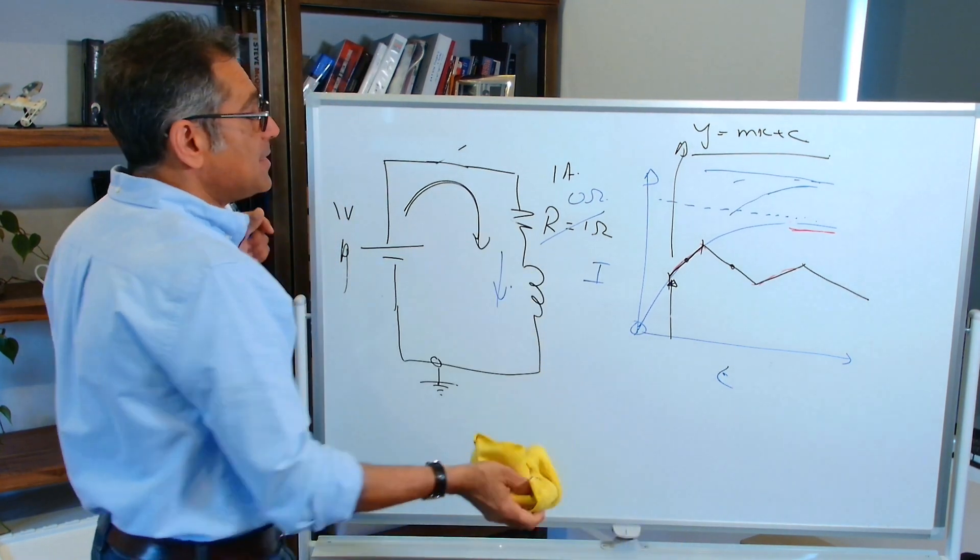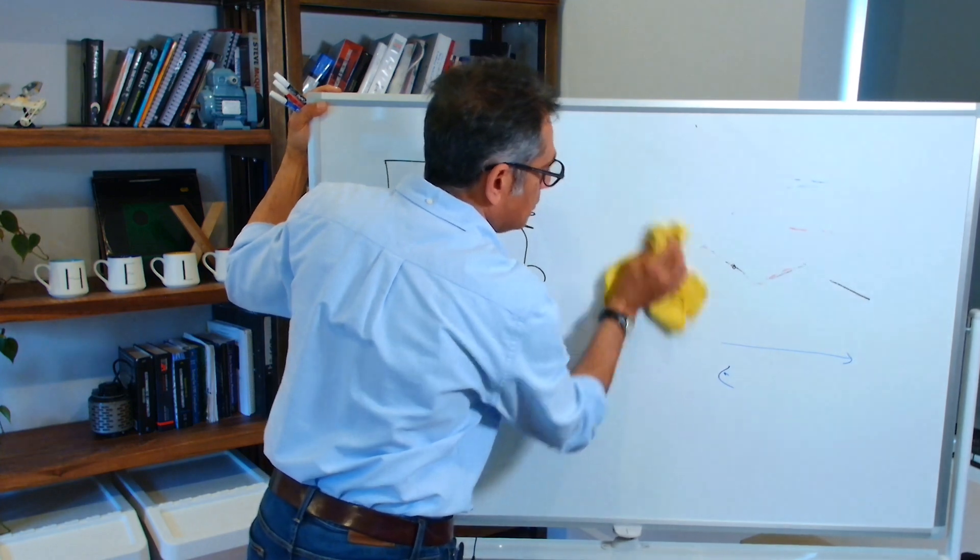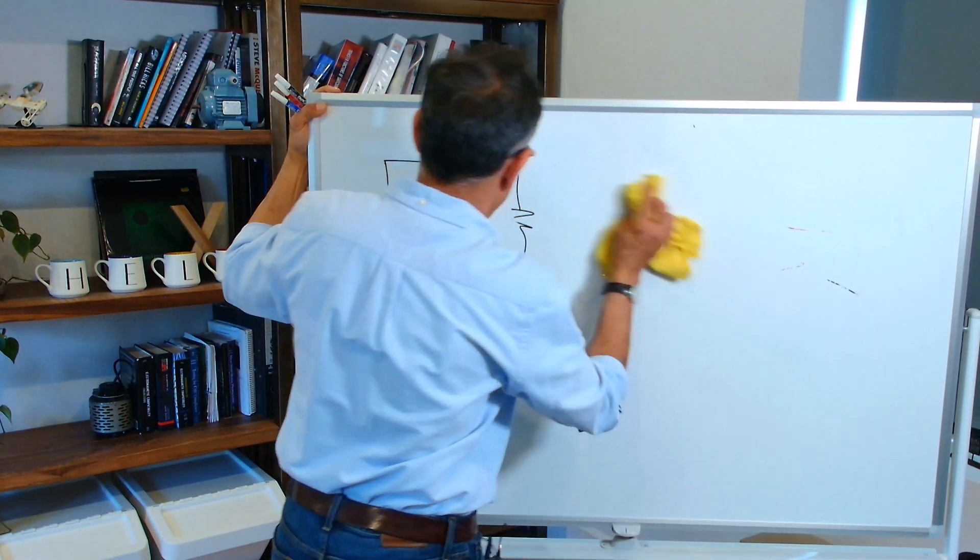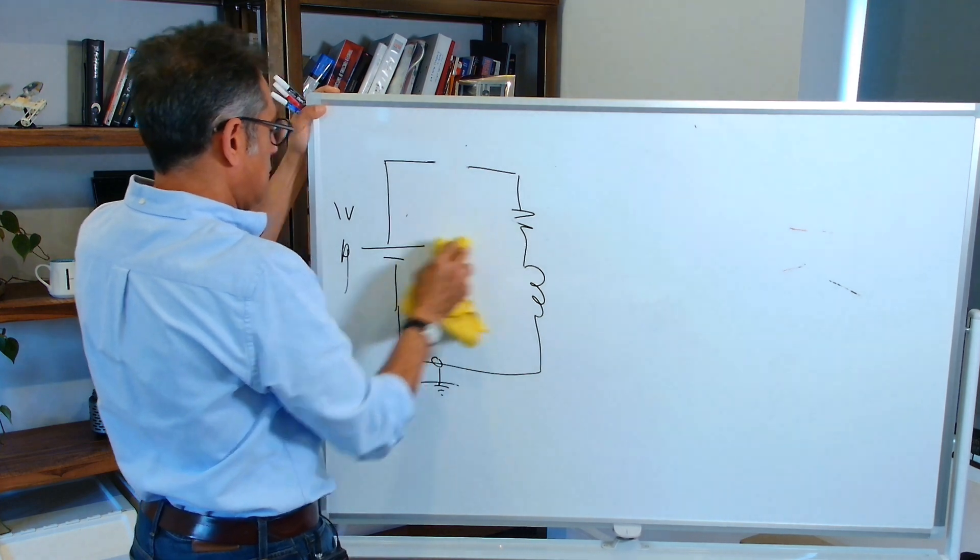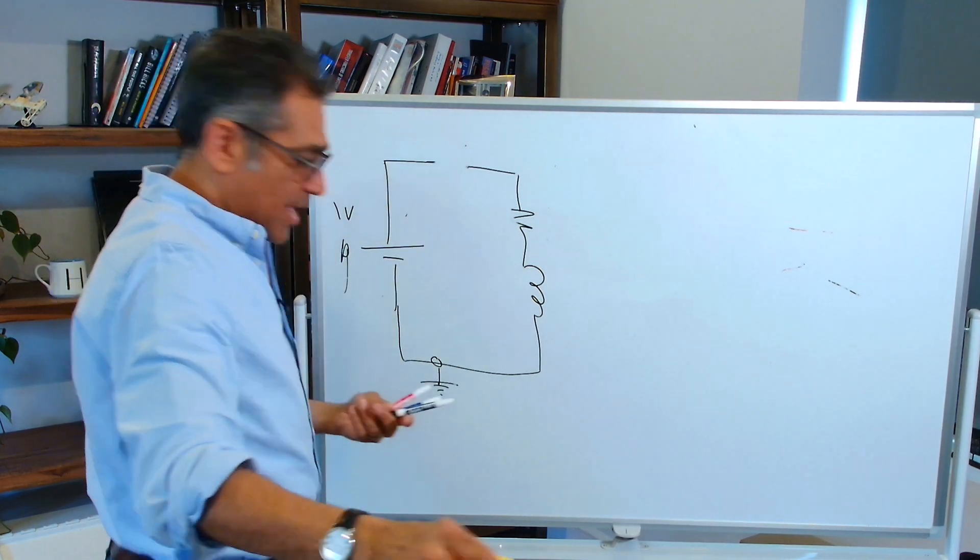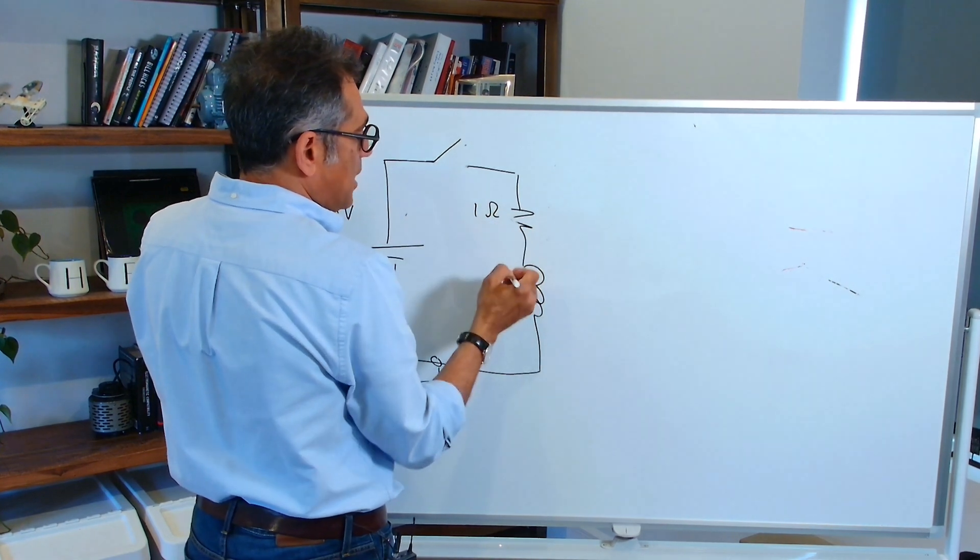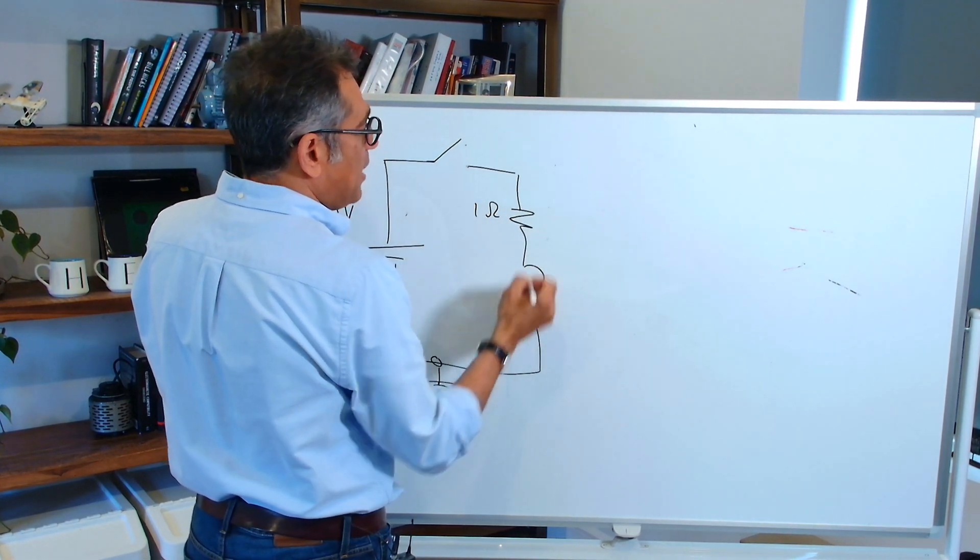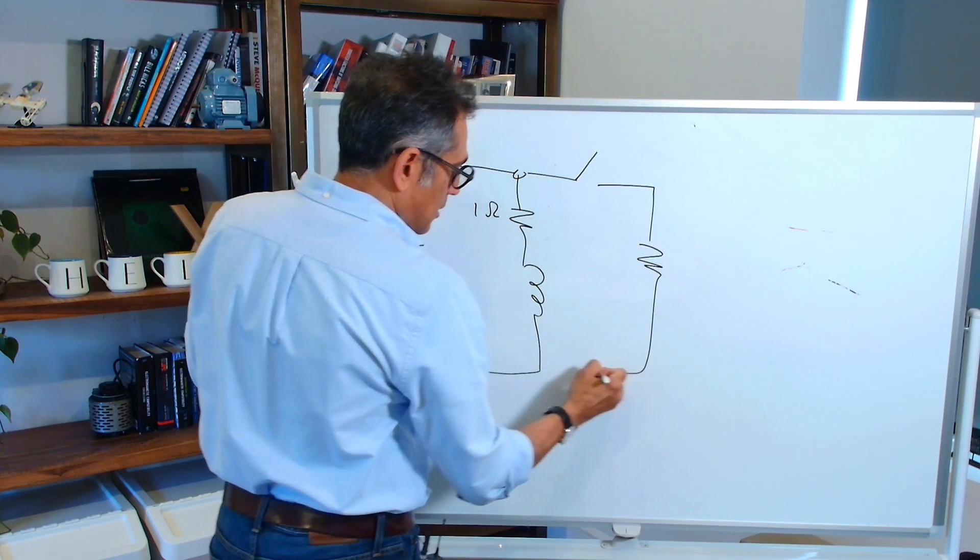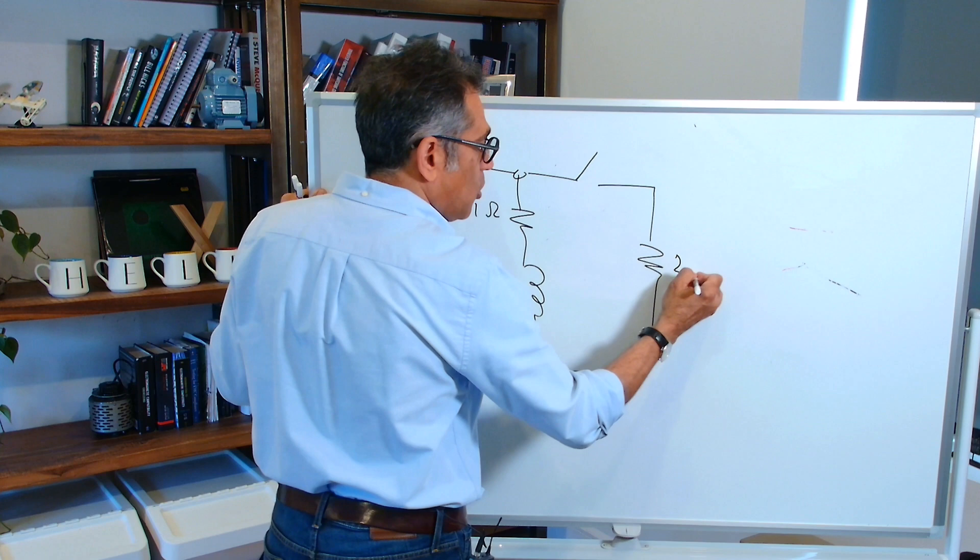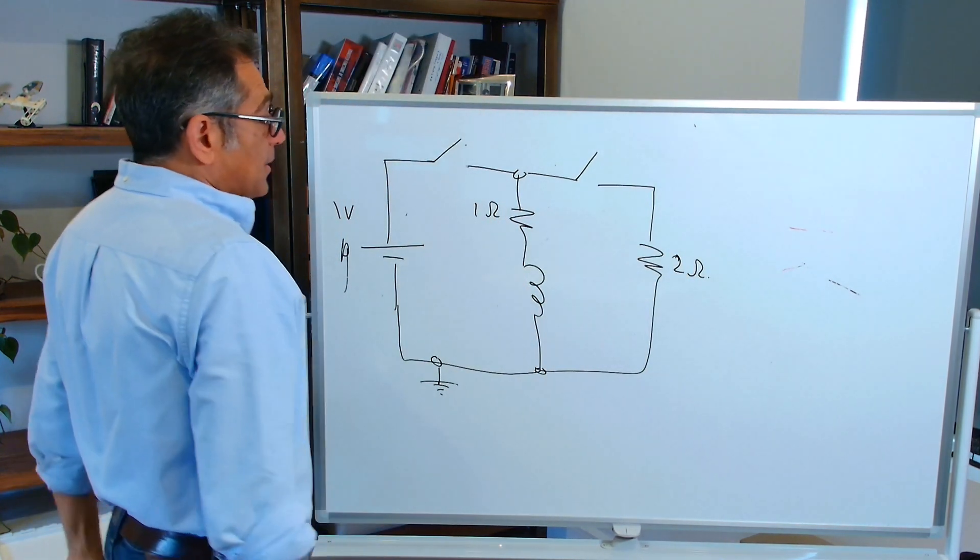Now, let us give you another example. Let us say that I have one volt there. I still have a switch. I have one ohm here. I have my inductor. Let us say now I have another switch. And I have two ohms here.